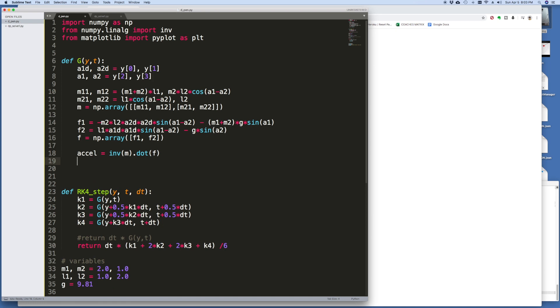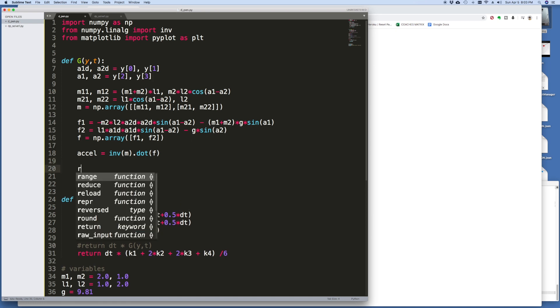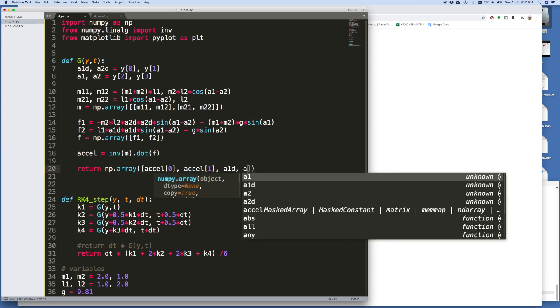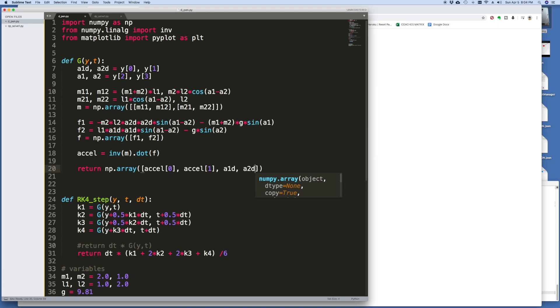Now all I need to do is I need to return this vector in state-space form. So I'm going to return a numpy array, and that's accel 0, accel 1 in the first two positions, and then just the velocities in the next two positions—so A1 dot and A2 dot. And that's it.